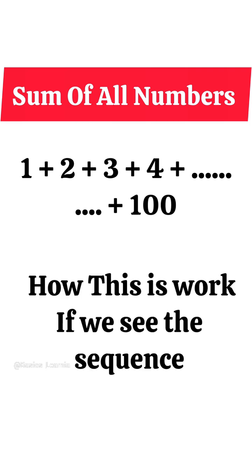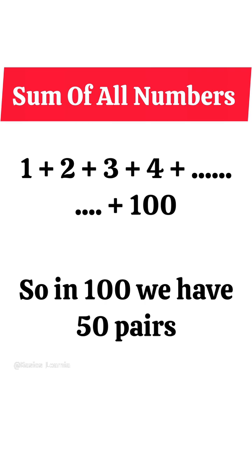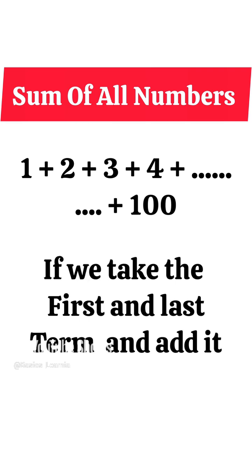Let's check how it works. If we see the sequence, here we are making pairs, so in 100 we have 50 pairs. If we take the first and last term and add it.